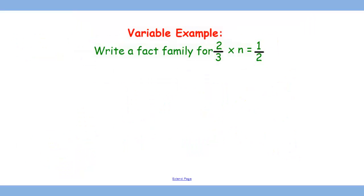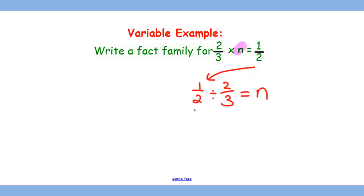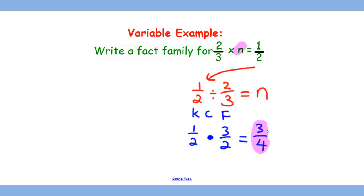Now let's try this variable example where we need to solve 2/3 times a variable equals 1 2/3. To rewrite this question in a more straightforward way, we can take the quotient, which is 1 2/3, and divide it by one of the factors, 2/3. Using the keep, change, and flip algorithm, we can solve this as 1 1/2 times 3/2, and that will give us 3/4 as the final answer.